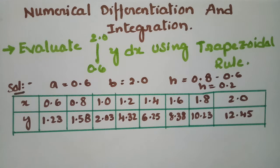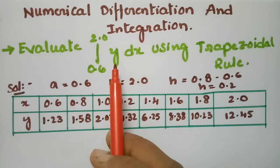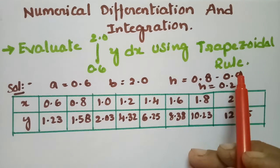Today I am going to solve a problem using the trapezoidal rule. This topic is from numerical differentiation and integration. We have to evaluate the integral from 0.6 to 2.0 of y dx using the trapezoidal rule.